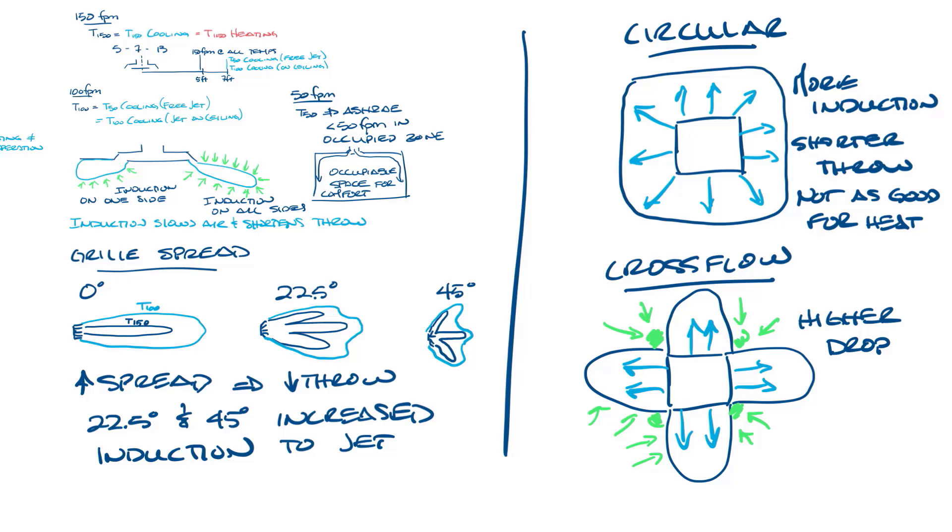As supply air comes out of the cross flow diffuser, room air is being induced into these corners. And since there's no airflow coming out of the corner, the dirt is induced and can collect in the corners. Circular pattern diffusers don't usually have smudging since their air flows from all around the diffuser.